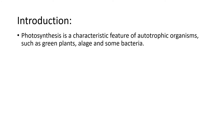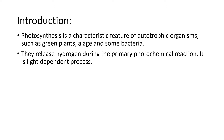Hydrogen gas production occurs in green plants, algae, and some bacteria. Photosynthesis is a characteristic feature of autotrophic organisms. These photosynthetic organisms - green plants, algae, and some bacteria - release hydrogen during the primary photochemical reactions.